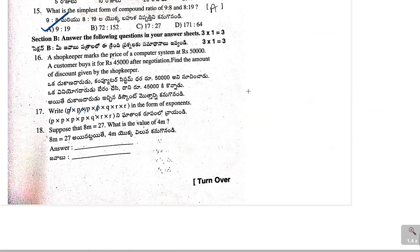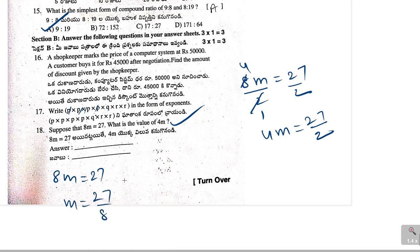Next, 18th one. Suppose that 8M equal to 27. Then, what is the value of 4M? To get 4M, we can do it in two ways. Just divide by 2 on both sides. We will get 4M equal to 27 by 2. This is the answer. Or, we can do like 8M equal to 27. From that M equal to 27 by 8. We need to get 4M. So, 4M equal to 4 into 27 by 8. This is 4 times 1 and this is 4 times 2. So, that will be equal to 27 by 2. So, that is the answer.